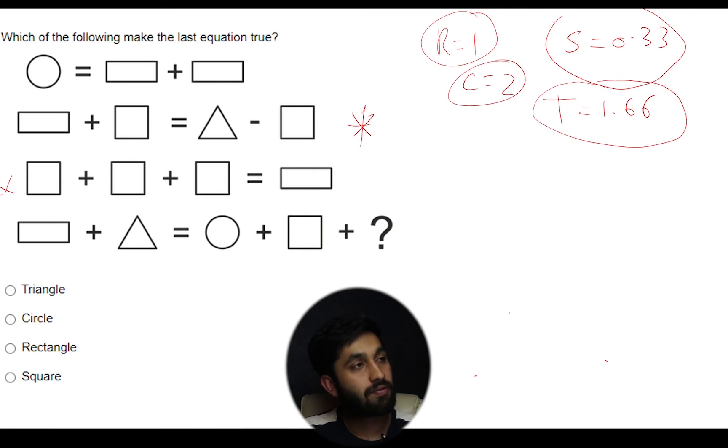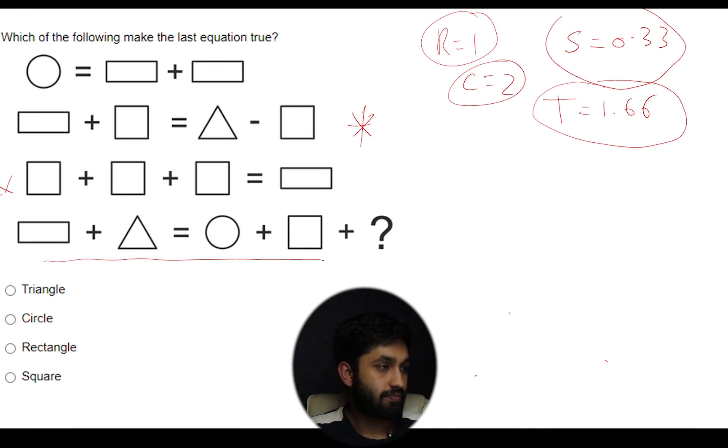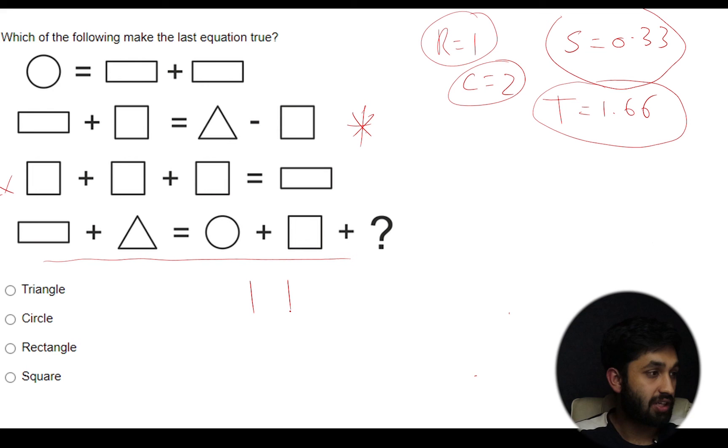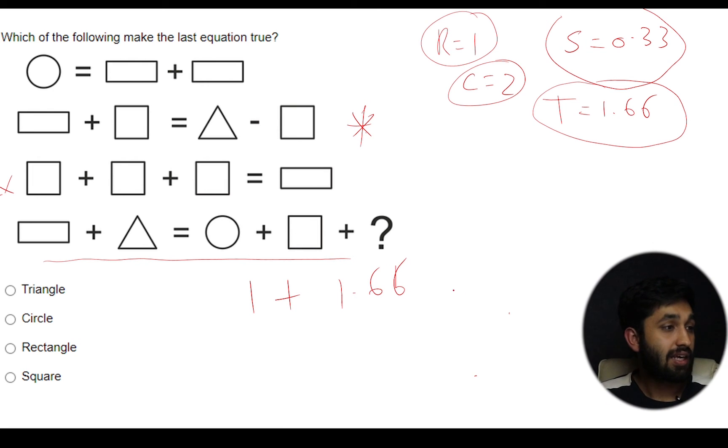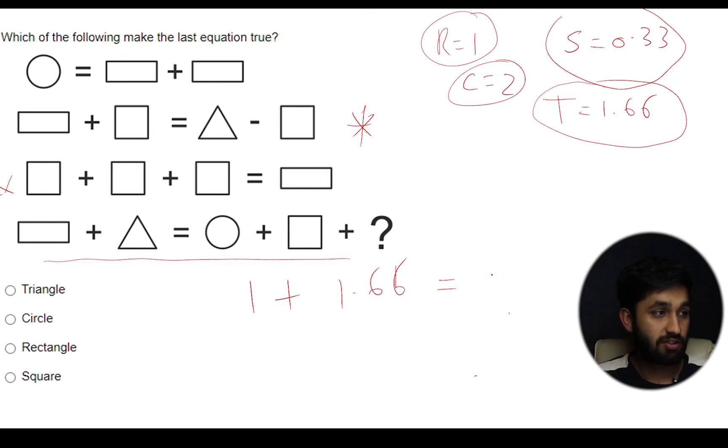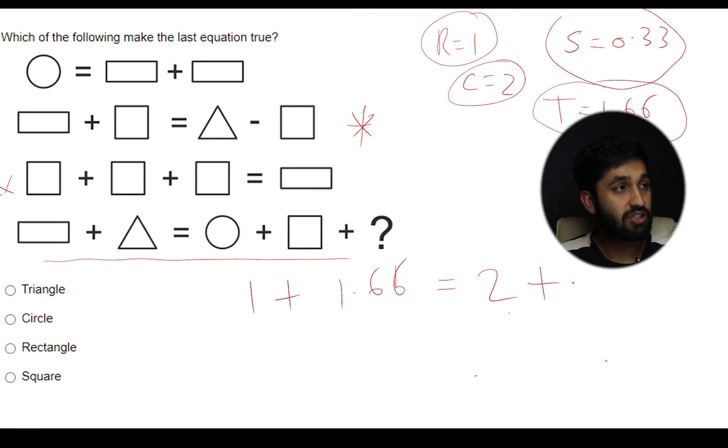Triangle equals 1.66. So now we have all four shapes and what they're equal to. Let's attempt the last equation. So rectangle which is 1 plus triangle which is 1.66 equals circle which is 2 plus our square which is 0.33 plus our magic unknown shape.